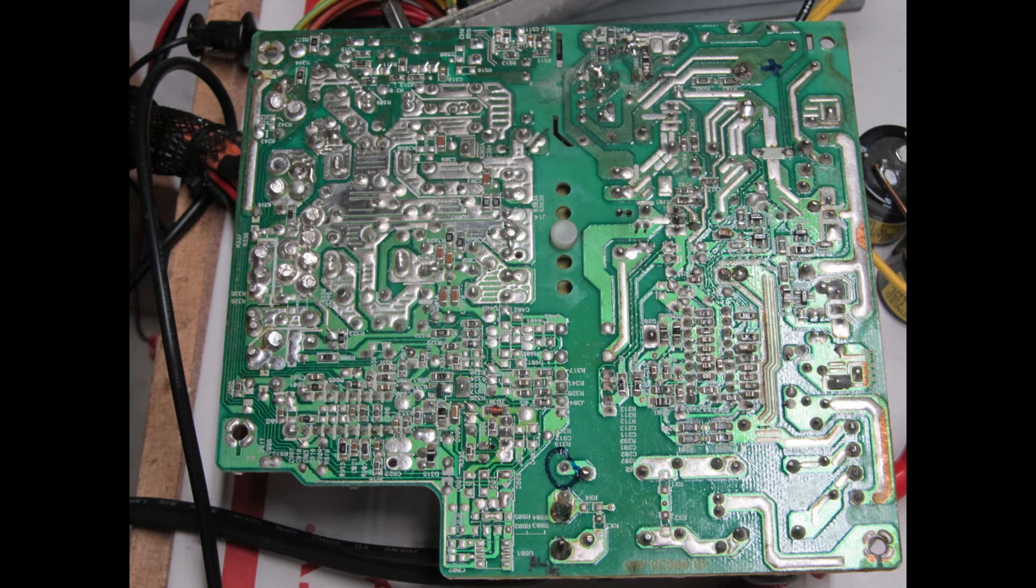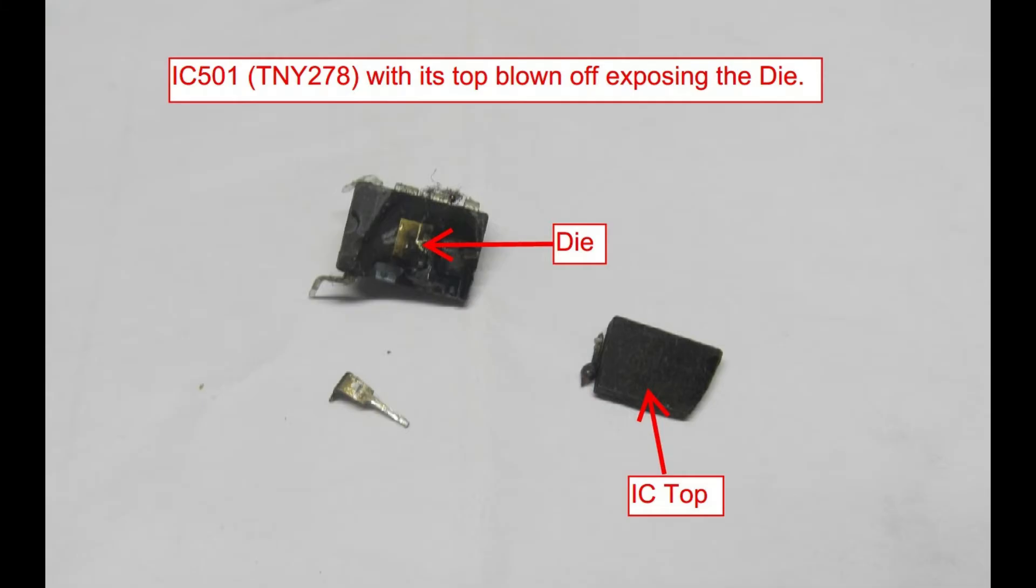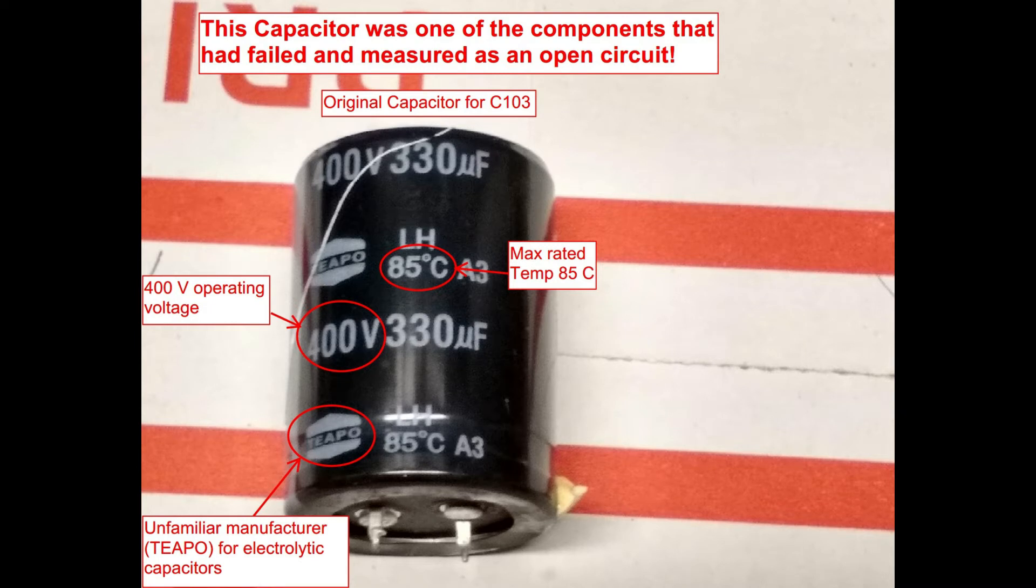From disassembling the power supply, I discovered two components that appeared to have failed. One was an integrated circuit IC501, which had its package top blown off, and the other was capacitor C103, which appears to have a slight bulge to the top of it. I ended up measuring across that capacitor to come to find out that it had an open circuit.